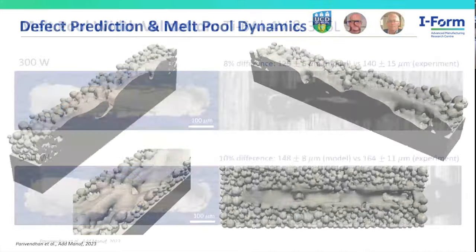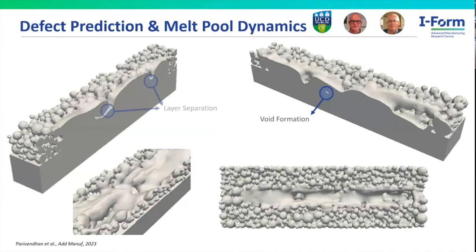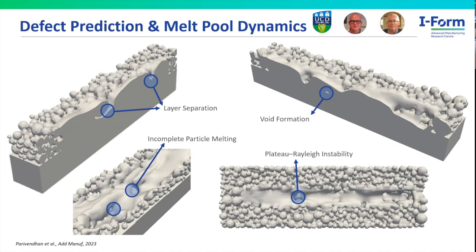Another key challenge in additive manufacturing — particularly when looking at properties and performance — is identifying defects. This work on the previous slides can be applied to look at things like incomplete particle melting, void formation, and other instabilities that occur, potentially leading to defects.